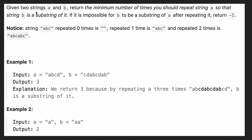Hi everyone, it's Sorkin. Today we have a problem where we are given two strings A and B, and we need to return the minimum number of times A should be repeated so that B is a substring of it.